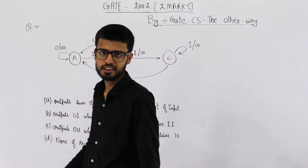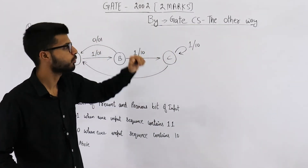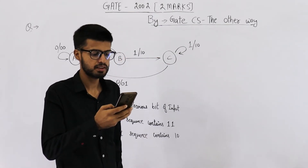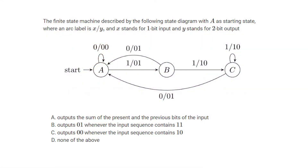Hello people, have a look at the statement of this question from the GATE 2010 exam. It was asked for two marks. The finite state machine described by the following state diagram with A as starting state, where an arc label is X slash Y, X stands for 1 bit input and Y stands for 2 bit output. You can see they have given you a finite state machine, and they have four options.